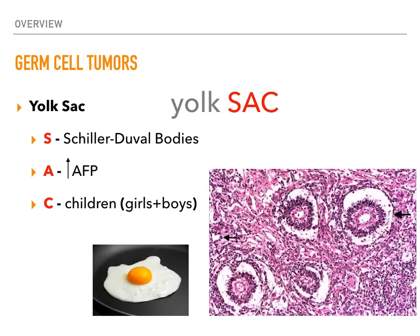There's increased AFP, which is a high-yield finding — if they give that to you in a question, you should immediately think of a yolk sac tumor. It is found in children: young girls in their ovaries, and also in young boys in their testes.